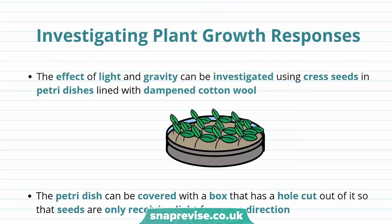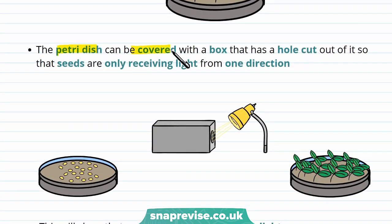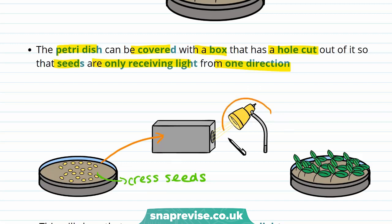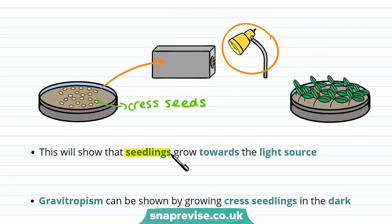We can actually measure and investigate plant growth responses. The effect of light and gravity can be investigated using cress seeds in a petri dish lined with dampened cotton wool. The petri dish can be covered with a box that has a hole cut out of it so the seeds only receive light from one direction. We expect to see the seedlings grow towards the light source, showing positive phototropism. In experiments you need controls, including the type of seeds, the number of seeds, the light intensity, the temperature, and the water, as these factors can all affect plant growth and might affect how reliable our conclusions are.